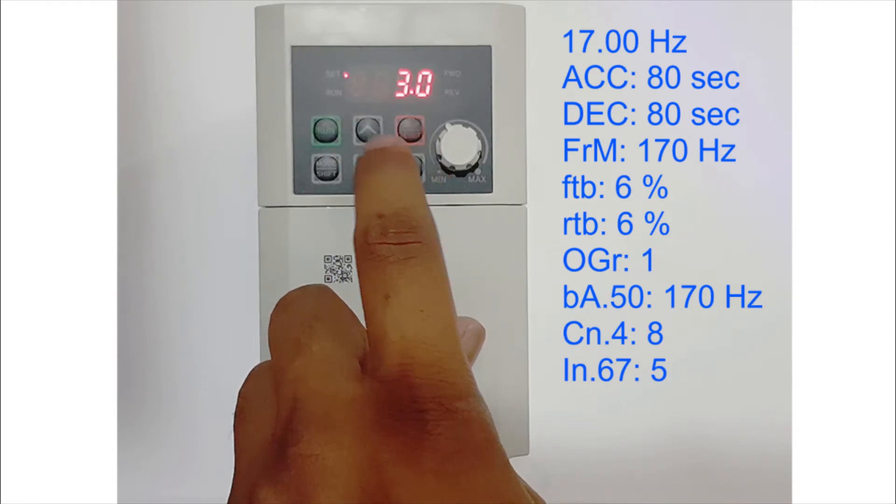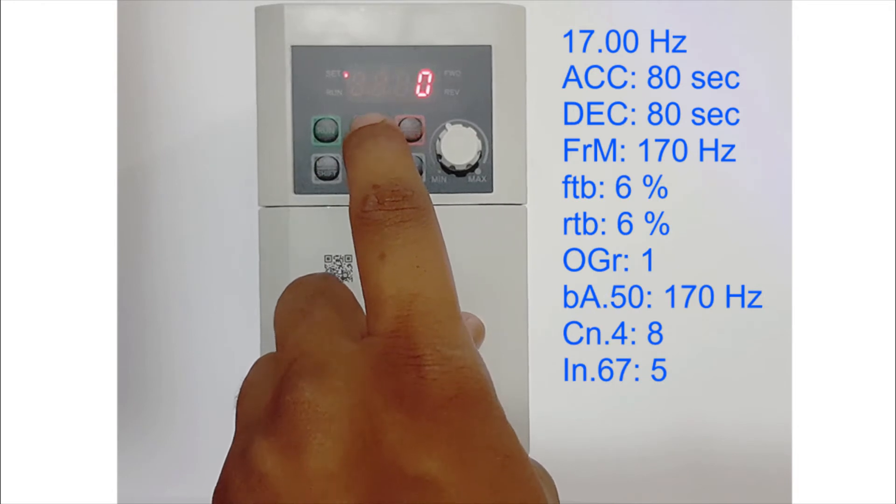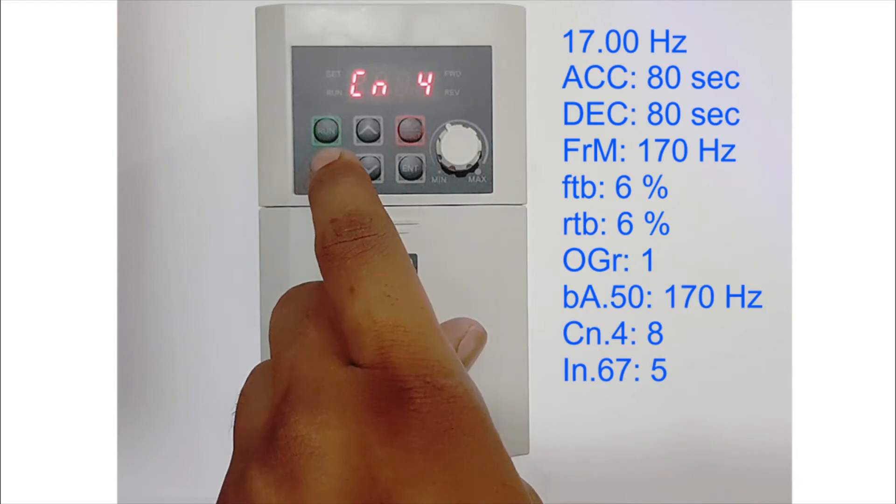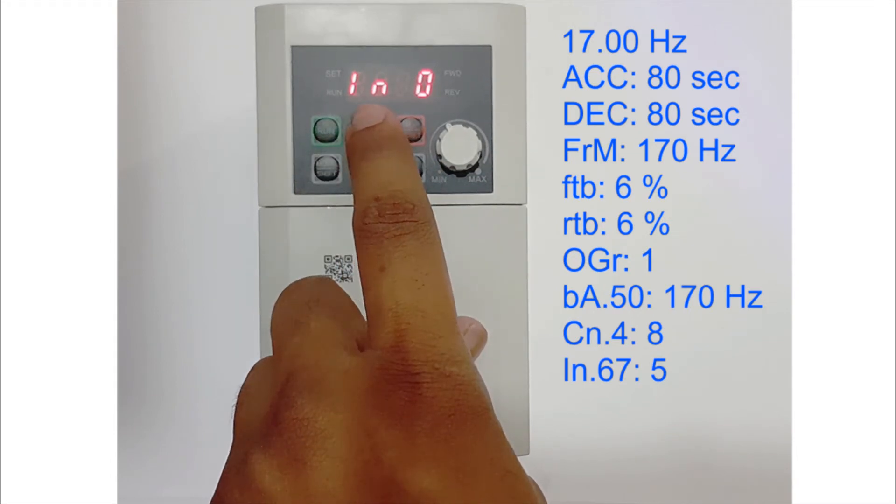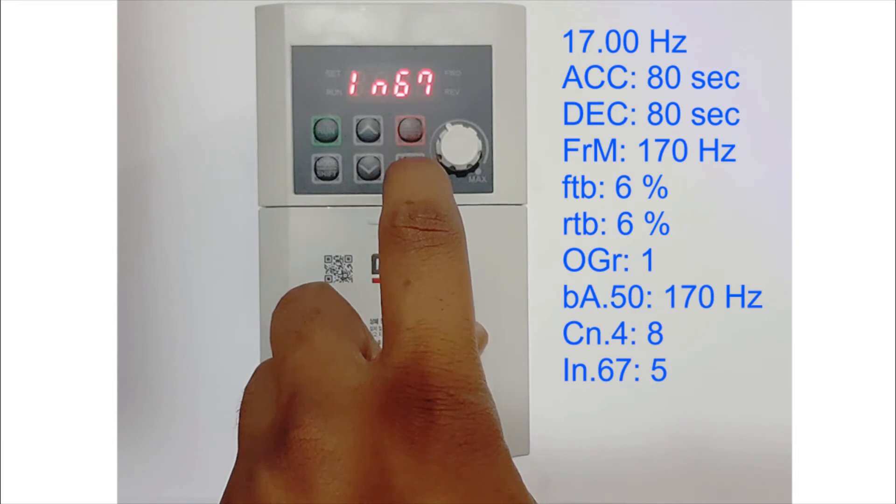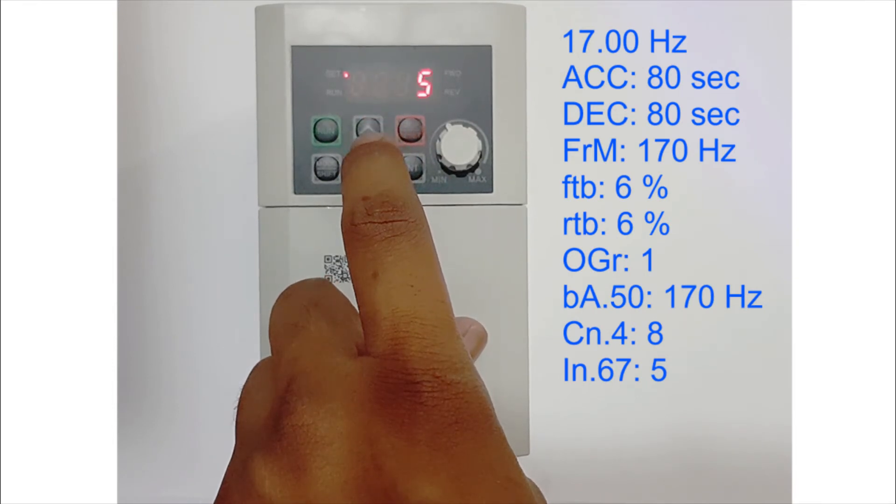Then I will press Shift. In the IN group, I will go to IN 67 and make it 5.